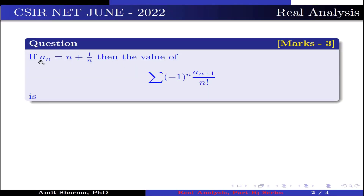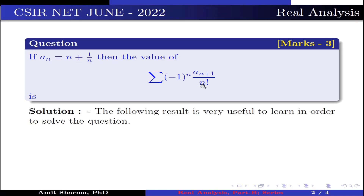The question is: if a_n is equal to (n+1)/n, then find the value of the summation of (-1)^(a_n) · a_{n+1} divided by n factorial.